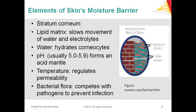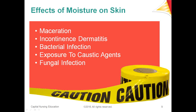So what happens when there's moisture on the outside? If there's too much moisture, the balance is disrupted. Moisture destroys the integrity and protection of the skin's layers. You end up with maceration, possible incontinence dermatitis, bacterial infection from overgrowth of bacteria and fungi that are normal flora, exposure to caustic agents when skin integrity is damaged, and fungal infections.